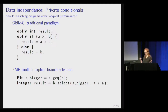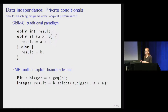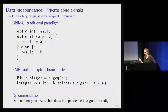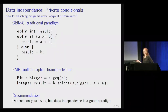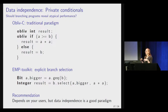EMP Toolkit takes the other approach with explicit branch selection. You compute your conditional — is A greater than or equal to B — and then you select the multiplication if A is bigger, otherwise select the other option. This makes it more explicit that you have to compute both branches ahead of time in order to call the select statement. I would suggest that data independence is a really valuable paradigm for developers to understand, and fostering greater understanding of data-independent programming paradigms would be a good thing for the community.